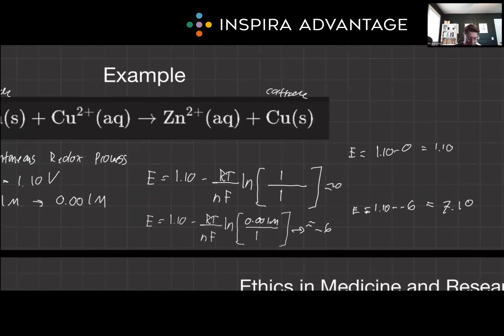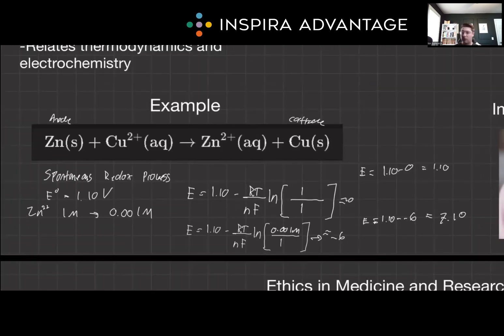Okay, so our E increased when we decreased the amount of zinc. This means that we are going to further shift the reaction to the right, increasing the cell spontaneity, making E value more positive than E standard. This shows the equation's power to predict changes in cell potential based on concentration shifts.